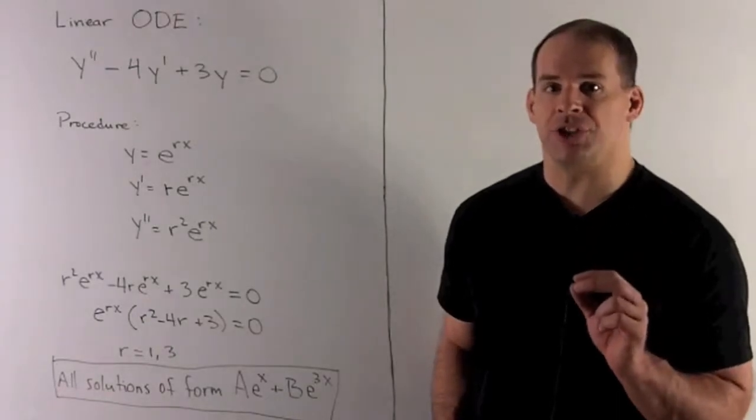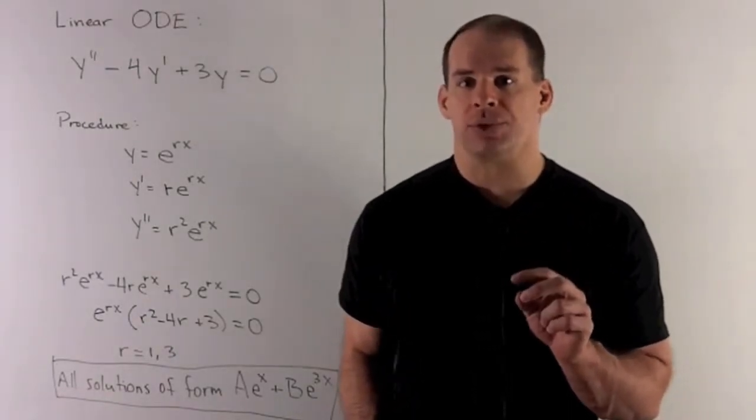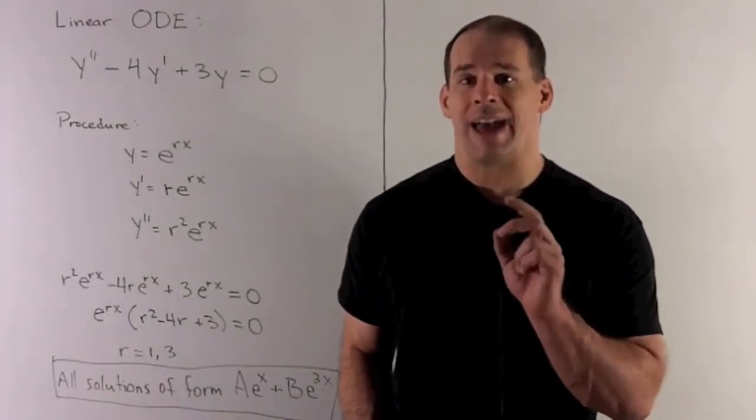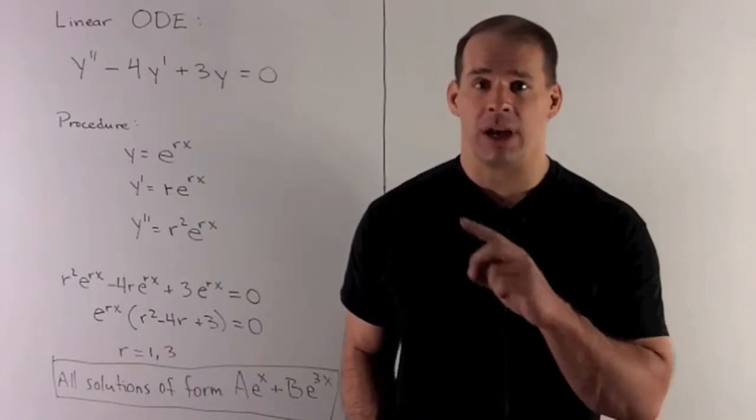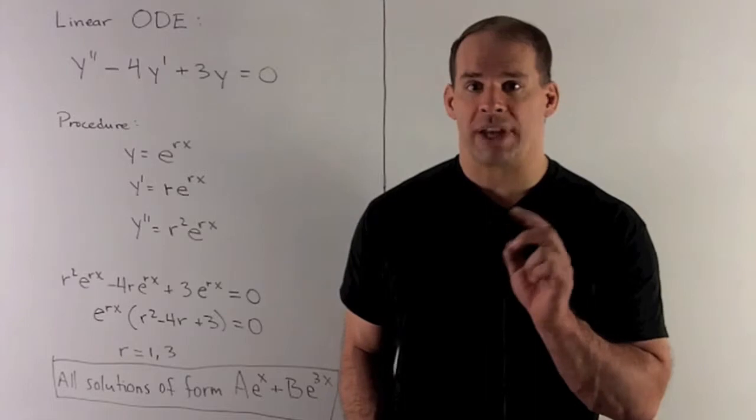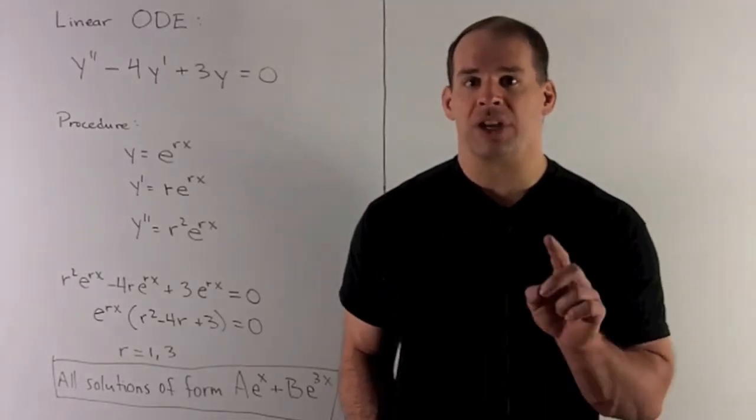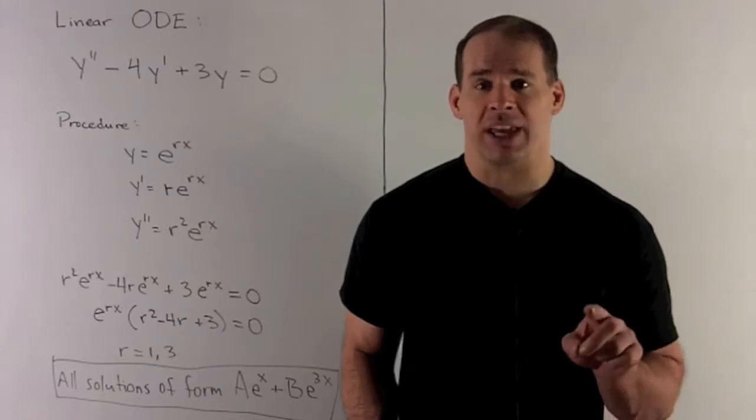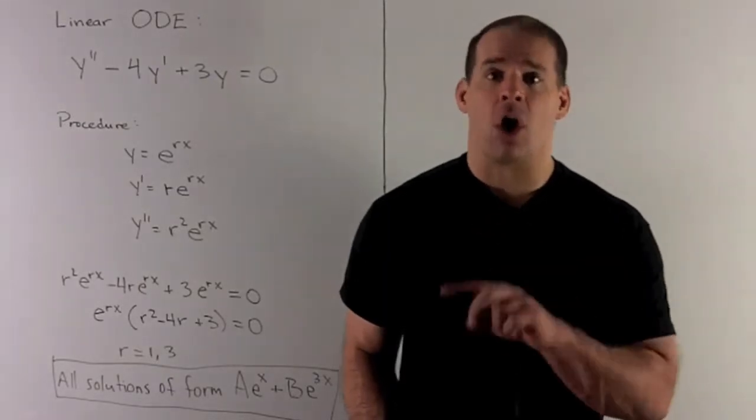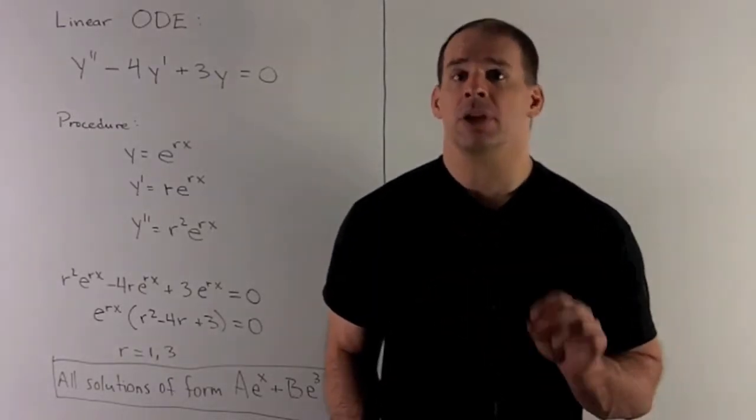What's our usual procedure? We're going to let y be equal to e to the rx, and then I'm going to stick it into our equation, see what comes out. What's going to happen is we're going to get an equation that's going to restrict the possibilities of our r's, and then we'll see the r's are going to cover all our bases.